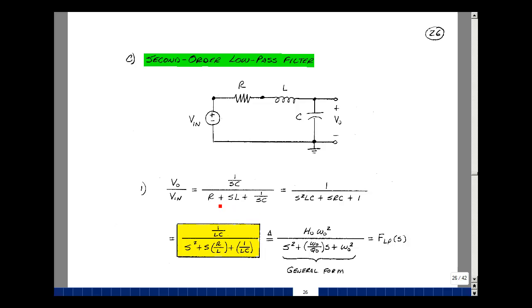Let's multiply the numerator and denominator by SC. So I get a 1 in the numerator, I'll get an SRC term, I'll get an S squared LC, and I'll get times this term equal to 1. Let's divide the numerator and denominator by 1 over LC. In the numerator, then I have 1 over LC.